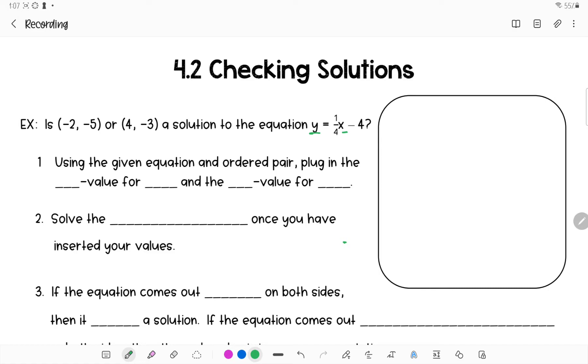So here's how you do it. First thing you're going to do is use the given equation and ordered pair and plug in the x value for x and the y value for y. Remembering that ordered pairs are listed x first and then y. So x, y, x, y.